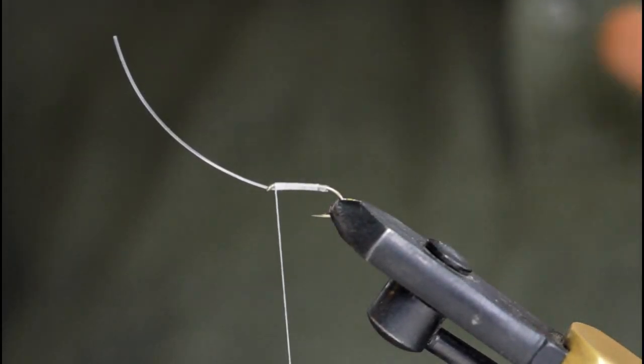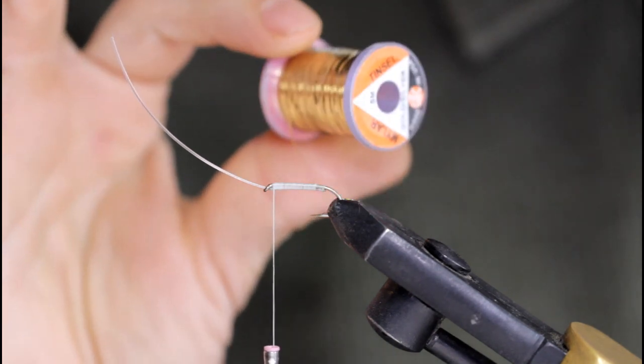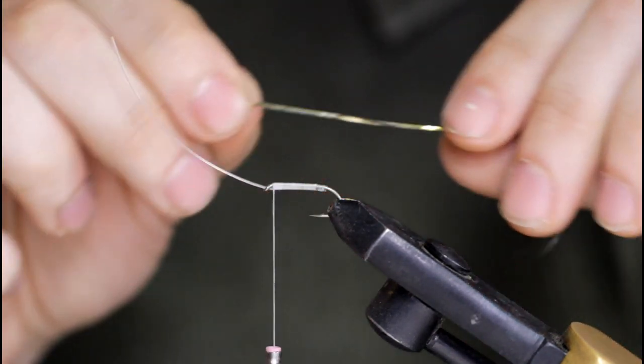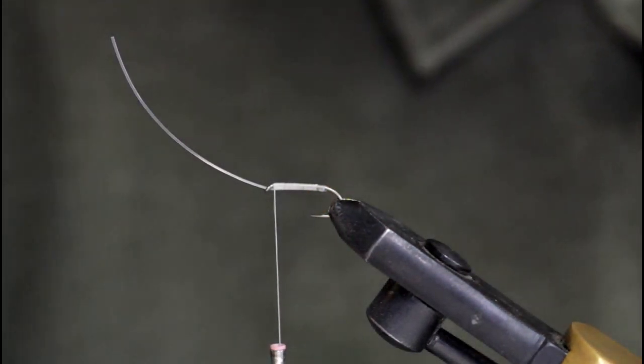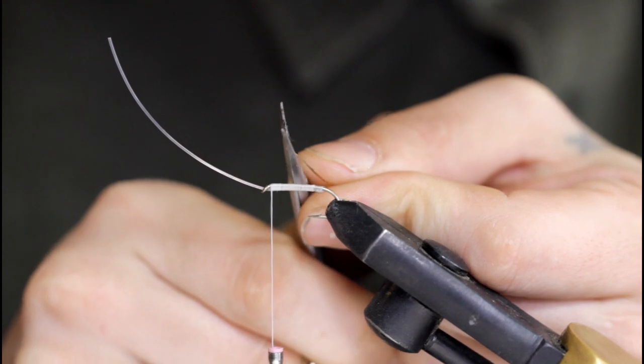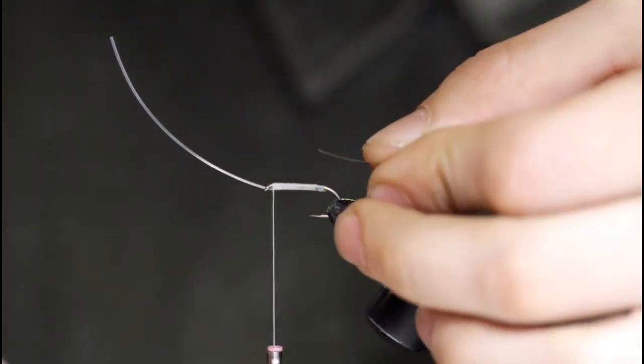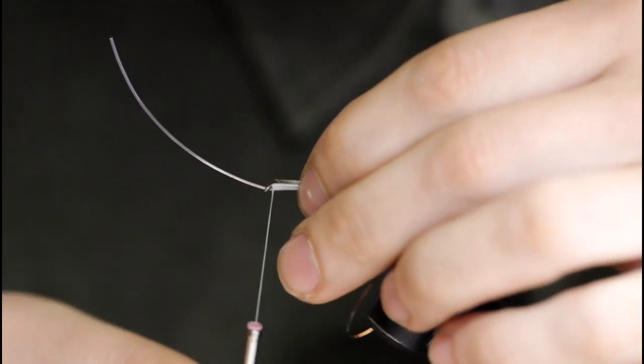I'm just going to work my way back up, making sure the monofilament is going straight up, not to the left or the right. All right, I'm going to grab some small mylar tinsel. Snip off a tie-in point. You don't really have to snip off a tie-in point for tinsel this small, it ties in pretty easily, but it's just a habit.